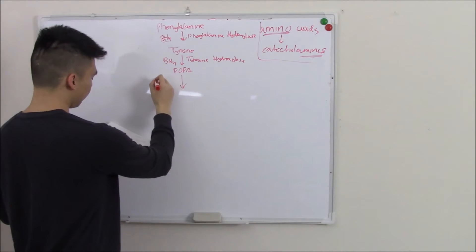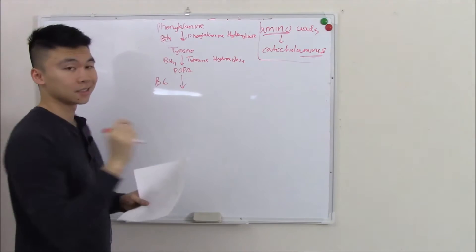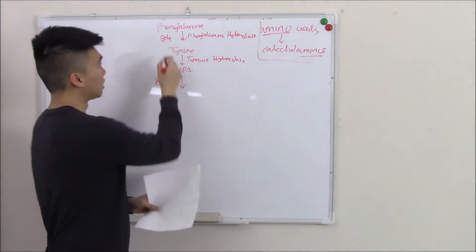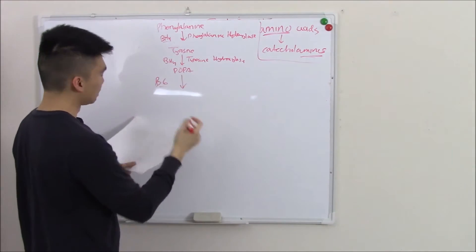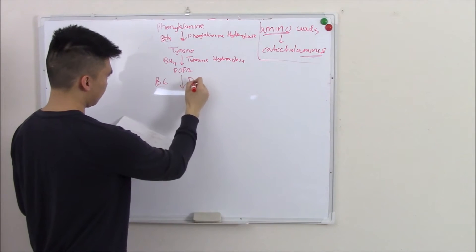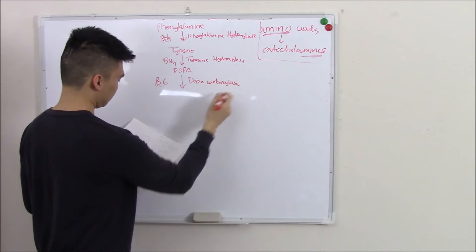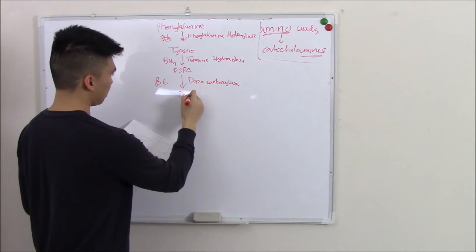DOPA with the help of B6. A lot of these enzymes need helpers. So it's not just important to know the enzymes, it's important to know the helpers. So with the help of B6, DOPA via DOPA decarboxylase becomes dopamine.